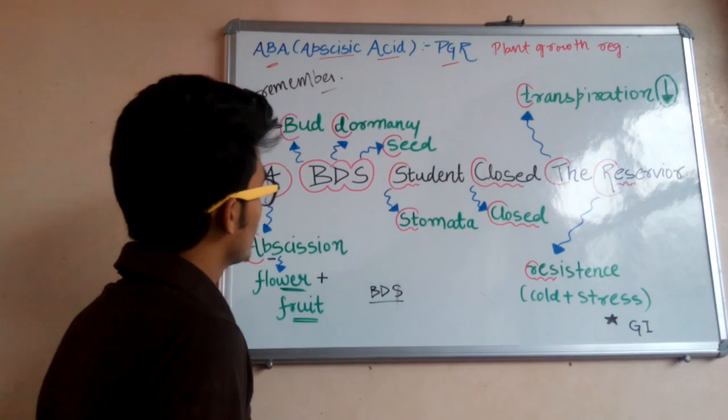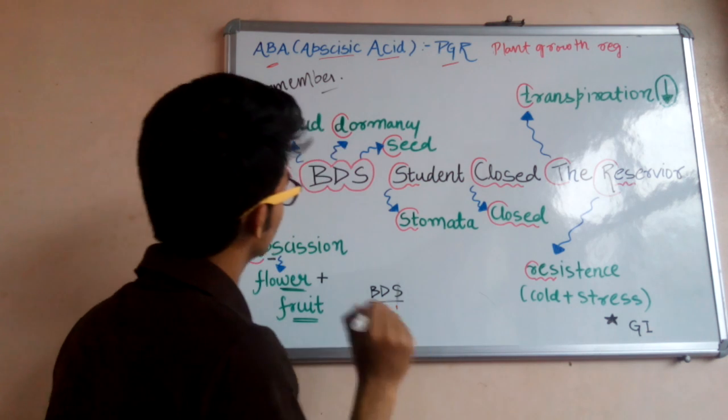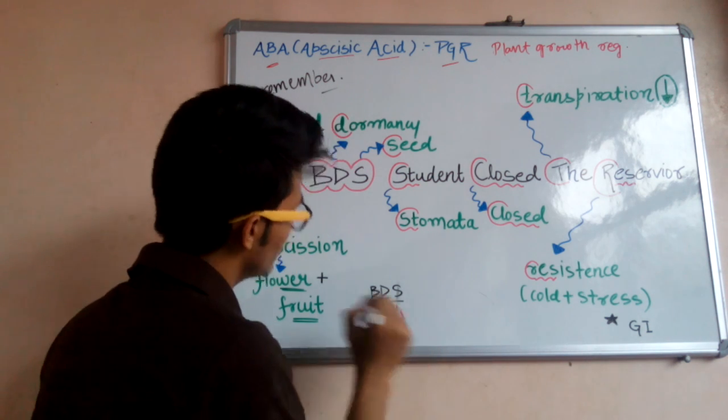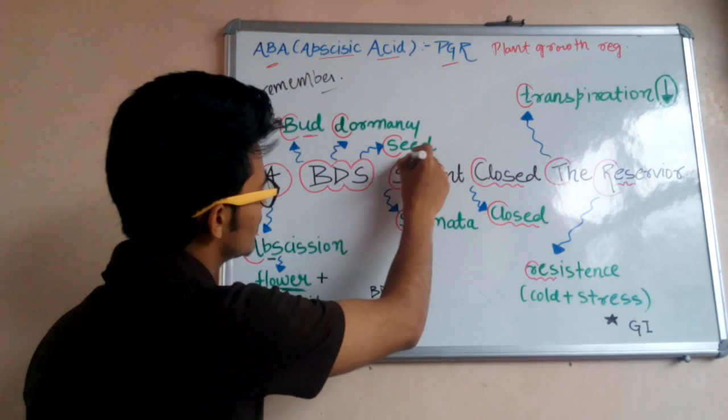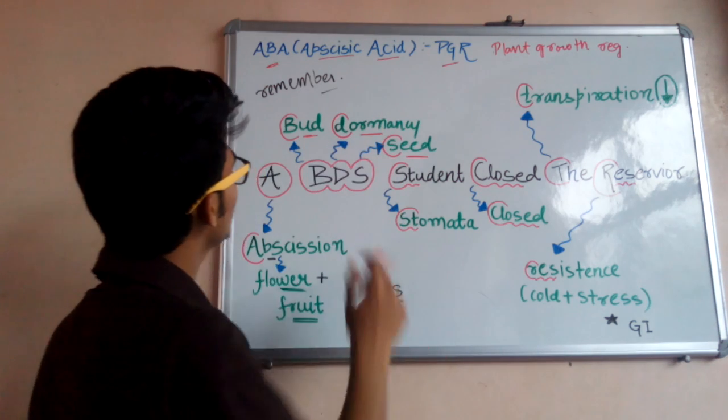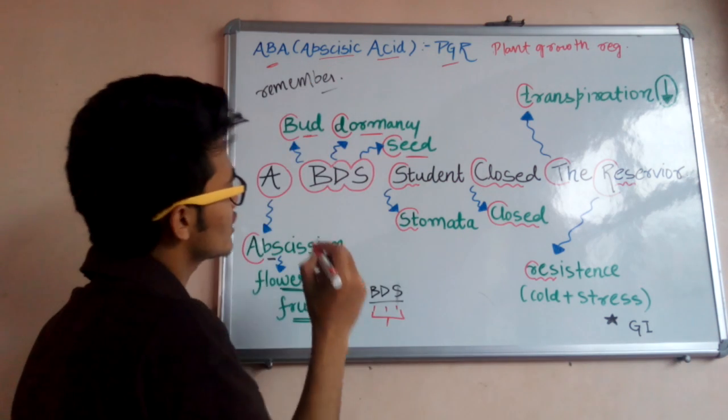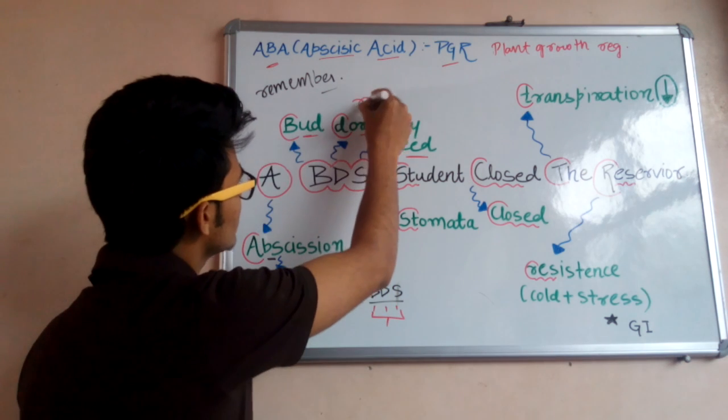After that, BDS. It has three capital letters: B, D, and S. So what do these letters mean? B means bud, S means seed, and D means dormancy. Therefore, the abscisic acid is responsible for the dormancy of bud and seed.